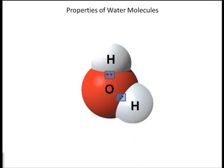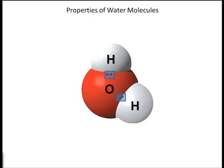There is a principle involved in chemical bonding called electronegativity. This is a chemical property that describes the tendency of an atom to attract electrons, or electron density, toward itself. The more electronegative an atom is, the more it attracts electrons toward it.